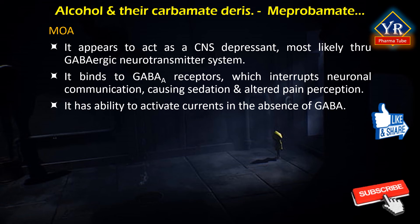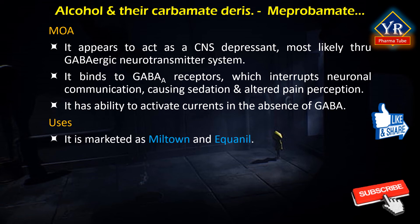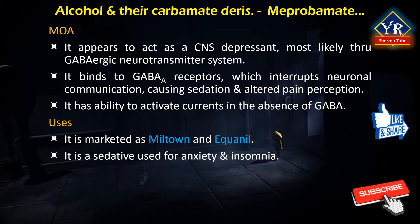Meprobamate is also a potent adenosine reuptake inhibitor. It is marketed as Miltown by Wallace Laboratories and Equanil by Wyeth Laboratories. It is a sedative used for anxiety and insomnia, first made available in the 1950s when it became popular but which is now rarely used.